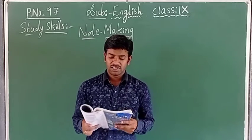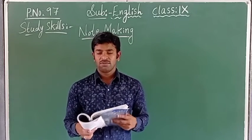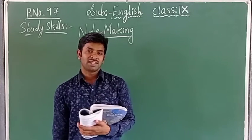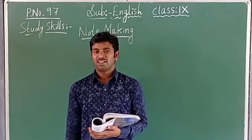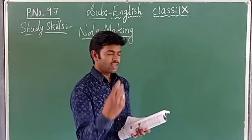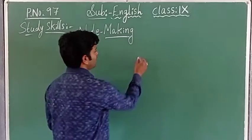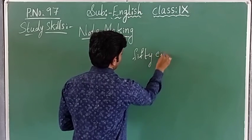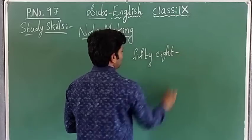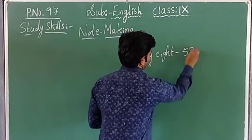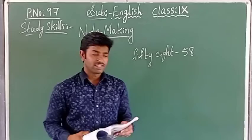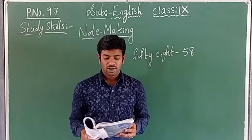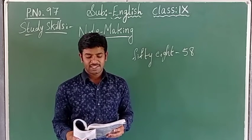First strategy: use numbers instead of words. Instead of writing the word form, you can write the numeral. For example, instead of writing 'fifty-eight' in letters, you can write 58. Second strategy: use short substitutes for long words. For example, instead of writing 'mathematics', you write 'maths'. Instead of 'environmental studies', you write 'EVS'.